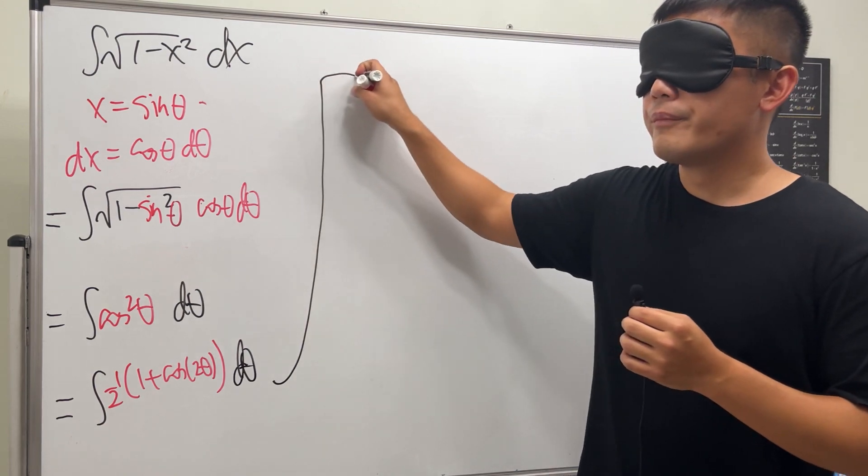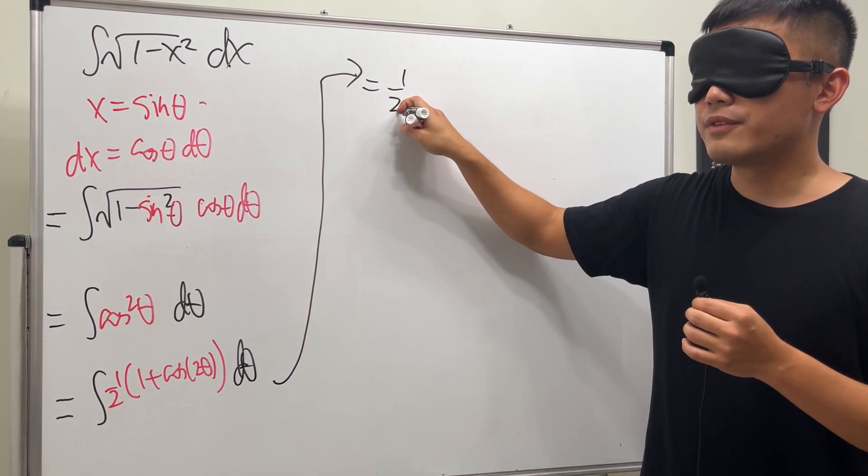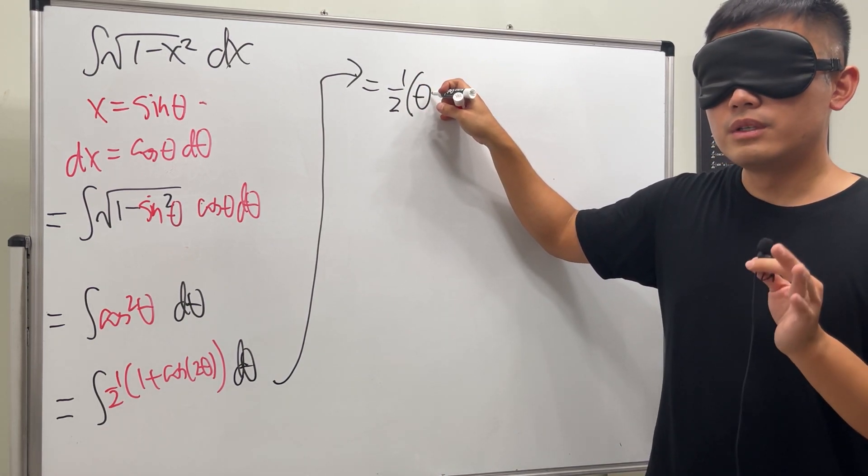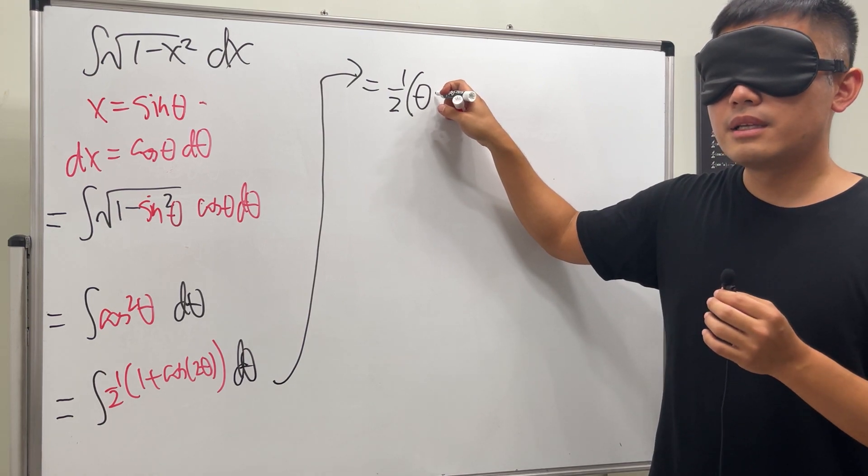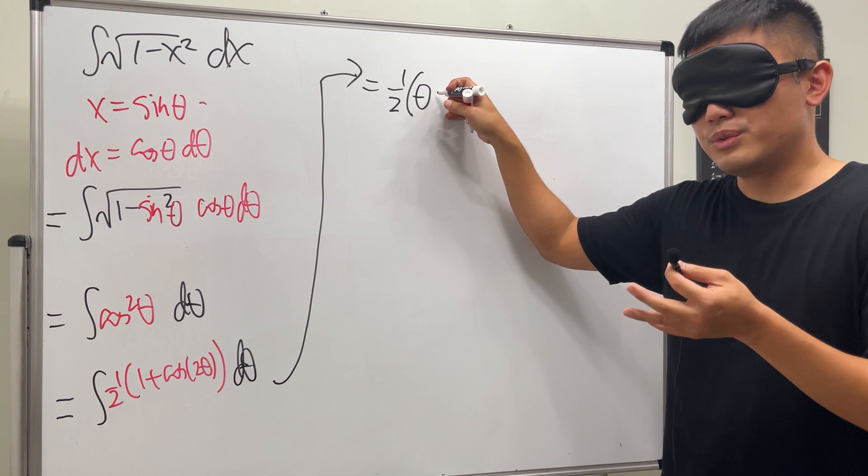And now we'll integrate this. We still have the one half at the front. Integrating one d theta is theta. The integral of cosine is sine, and inside we have the two, so we have to divide by two because of the two theta—you have to divide by the derivative, reverse chain rule.